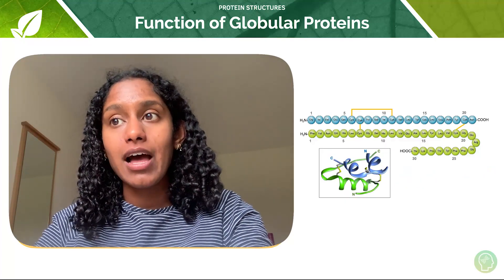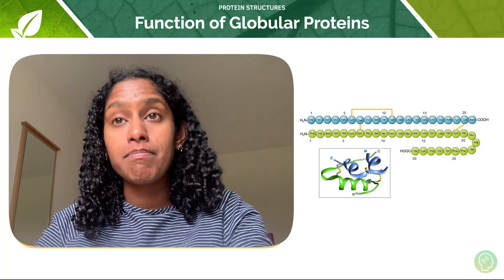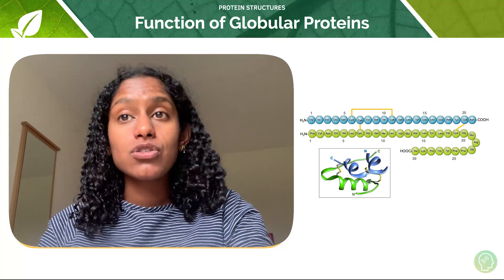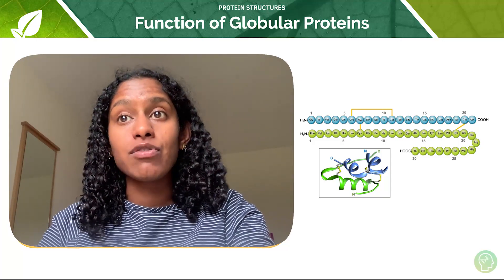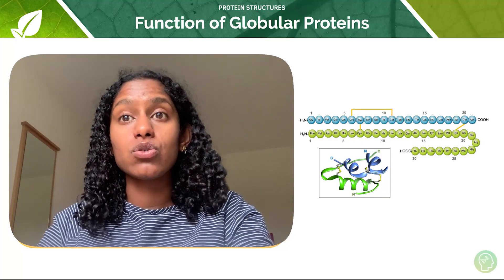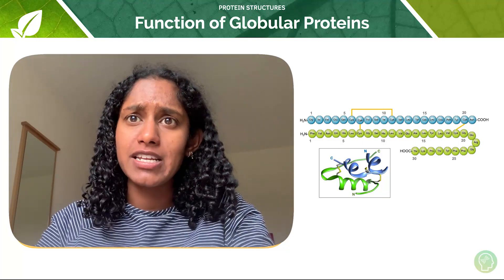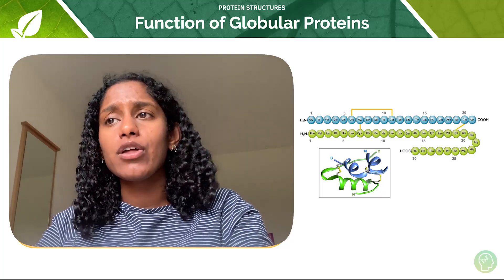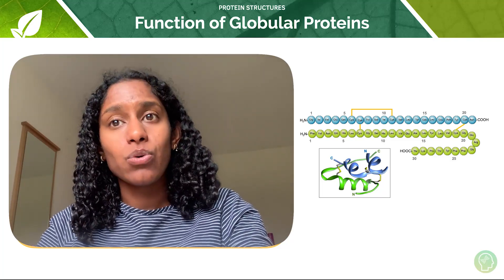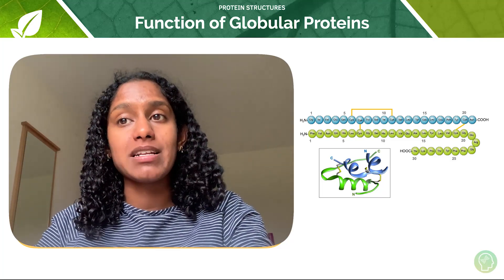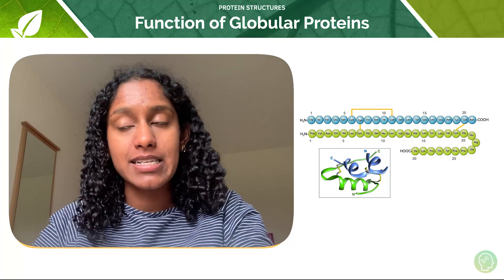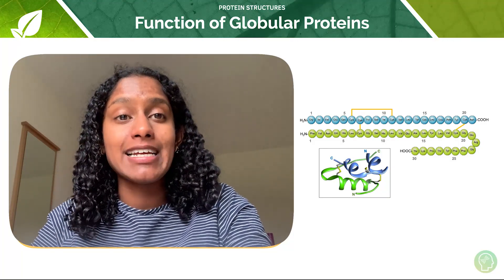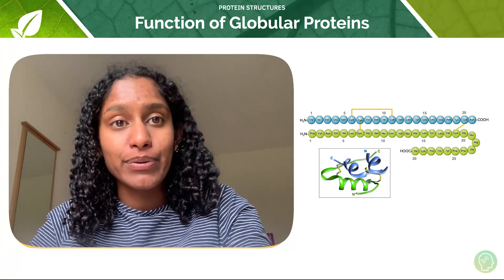The solubility of globular proteins also makes them really good as messenger proteins. These proteins are otherwise known as hormones, and they regulate the body's metabolic processes. An example of that is insulin, which regulates blood sugar levels.